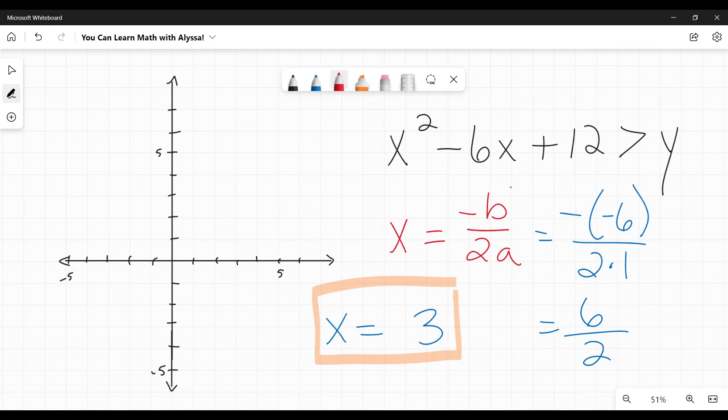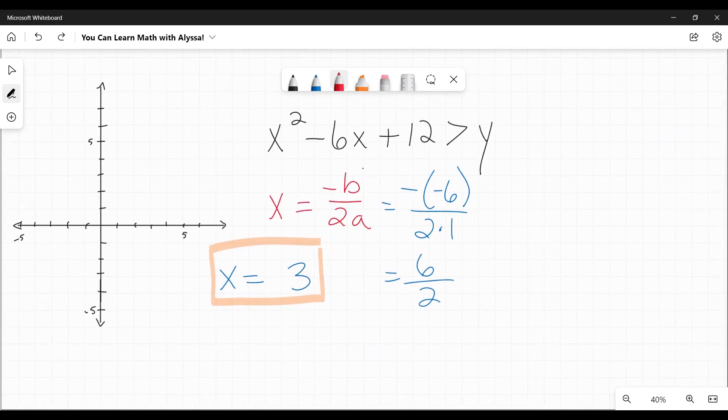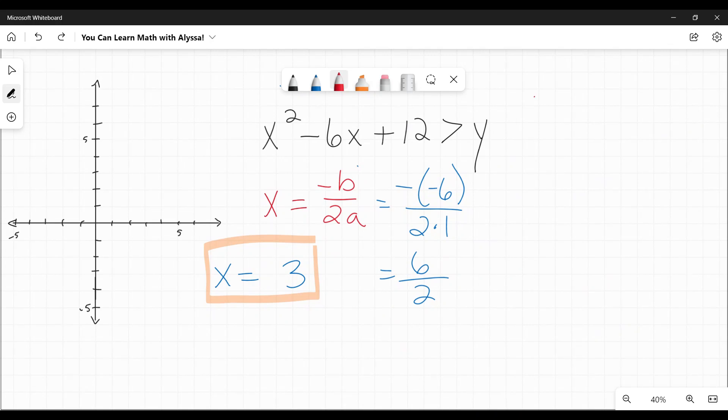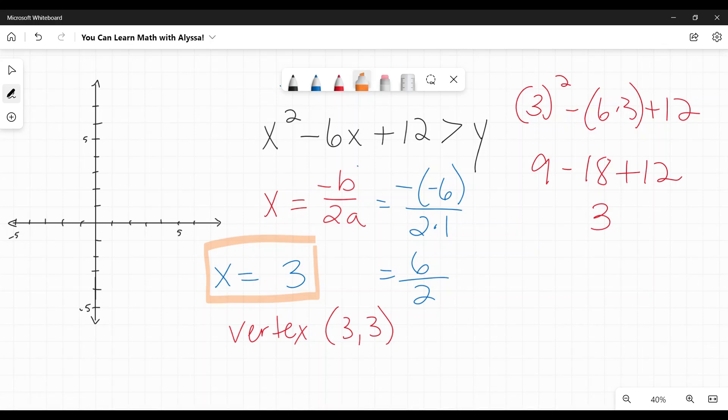So, to find the y, I need to take 3 and plug it back into this equation. So, that's my next step. I'm going to slide this over, and I'm going to write it out over here. So, my next step, I plug 3 in. So, I have 3 squared minus 6 times 3 plus 12. I need to solve that. 3 squared is 9 minus 6 times 3 is 18 plus 12. 9 minus 18 is negative 9 plus 12 is positive 3. So, when x is 3, y is 3. So, my vertex is at 3, 3.